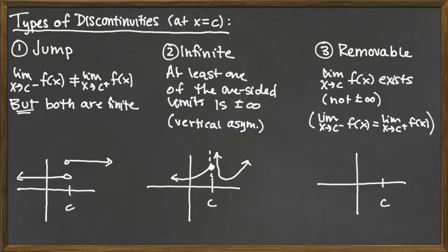So a removable discontinuity, in some sense, is a very minor discontinuity. We've got a nice little function here, and we are just missing one point there. And that's why for a removable discontinuity, we often think about a removable discontinuity as being a hole.